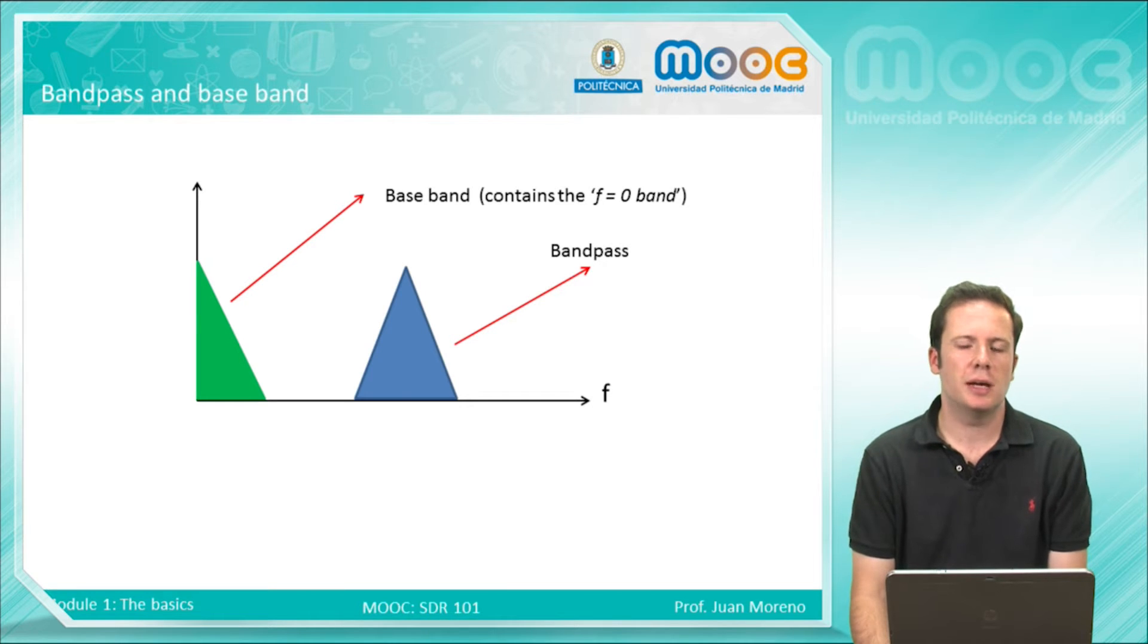We have two types of bands: the baseband that contains the DC or the 0 Hz band, and the bandpass, which does not contain this band.